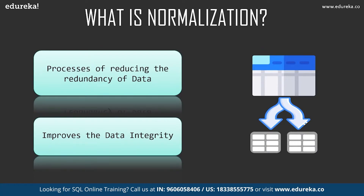It is a multi-step process that puts data into tabular form, removing duplicated data from relational tables. On the screen, we just saw that a table is getting decomposed into two smaller tables. Normalization is used mainly for two purposes: the first is to eliminate repeated data, as having repeated data not only makes the process slow but will cause trouble during transactions. The second is to ensure that data dependencies make some logical sense.